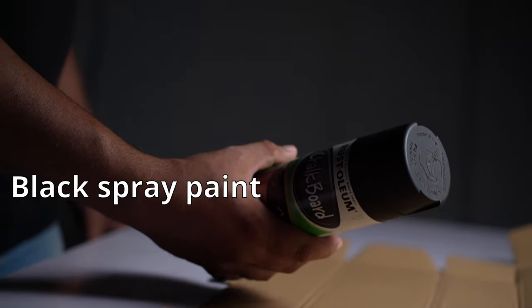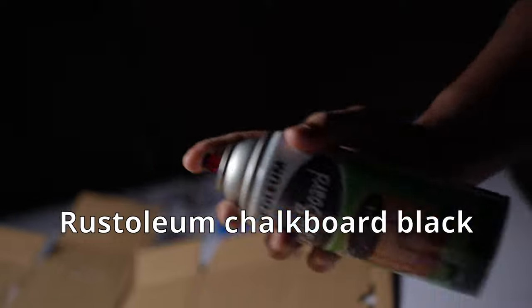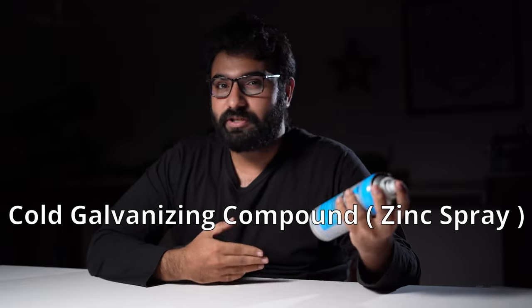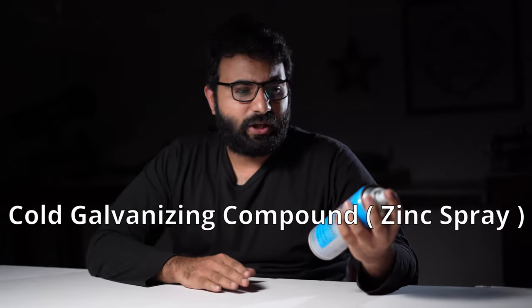Then there is the other option which is black spray paint with a matte finish. I used Rust-Oleum Chalkboard Black which worked well for me. The best option, however, is cold galvanizing compound spray. It's basically a paint with lots of zinc in it. You can get this stuff on Amazon or local stores.